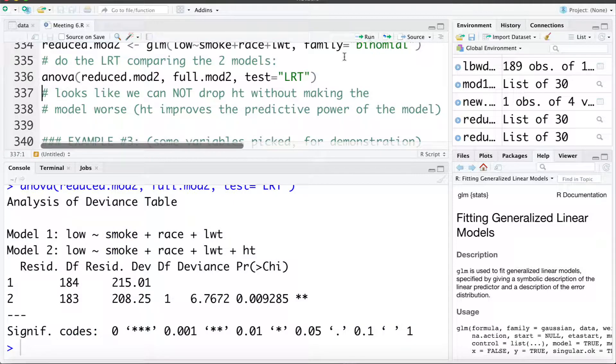Now here we can see the change in the residual deviance. It's about a 6.7 change. The change appears to be statistically significant and our conclusion here would be to reject our null hypothesis and say that we have evidence to believe the full model is better. In other words, removing HT from the model decreases the predictive power of the model.